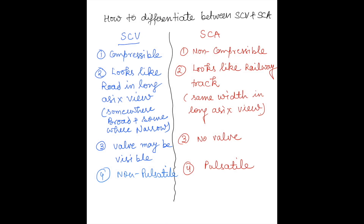In the long-axis view, you can differentiate between the subclavian vein and subclavian artery as follows: the subclavian vein is compressible while the subclavian artery is non-compressible. The subclavian vein looks like a road — broad in some places and narrow in others — but the subclavian artery looks like a railway track, with the same width all the way through. A valve may be visible in the subclavian vein but there is no valve in the subclavian artery. There is no pulsation in the subclavian vein, whereas the subclavian artery is always pulsatile.